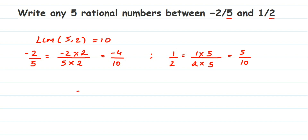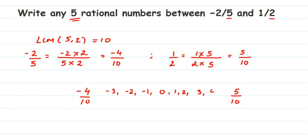Now we have minus four by ten and five by ten. We need five rational numbers, so let's see what integers lie between minus four and five in the numerator. We have minus three, minus two, minus one, zero, one, two, three, and four — that many numbers. Out of these, can we pick five? Yes, we can pick any five.